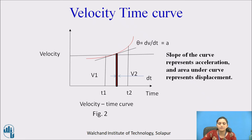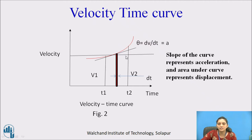Now we will see the velocity-time curve. Take velocity on the y-axis and time on the x-axis. At time interval t1, velocity is v1, and at time interval t2, velocity is v2. The slope of the tangent at any point is dv by dt, which is acceleration. So the slope of the curve represents acceleration, and the area under the curve is v into t, which is displacement.